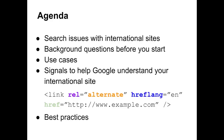We'll begin by discussing some of the potential search issues that are more common with international sites — the scenarios you'll hope to avoid during your global expansion. Next, we'll discuss background questions to share with your company before you expand. Third, we'll discuss two common use cases of international expansion, and explain how your site's configuration can be more search friendly using signals such as rel alternate hreflang. Finally, we'll wrap up with best practices.